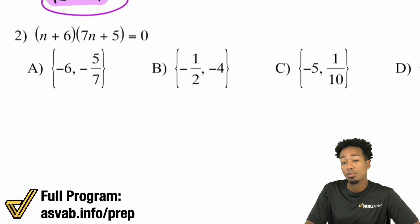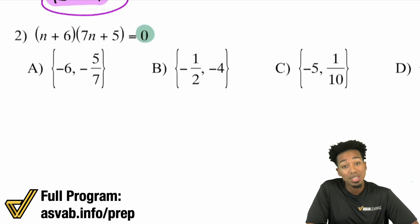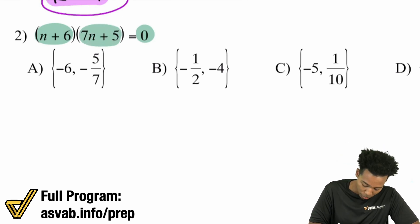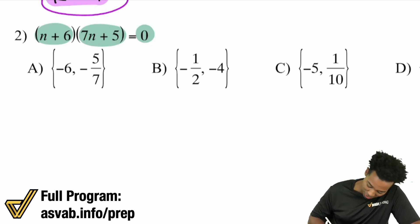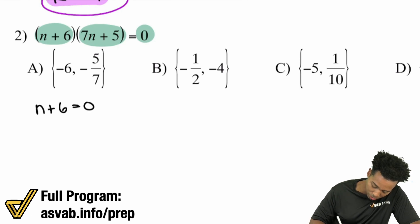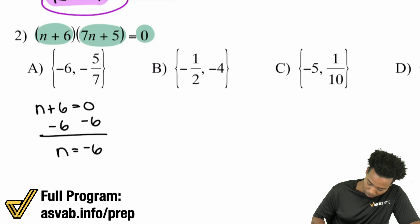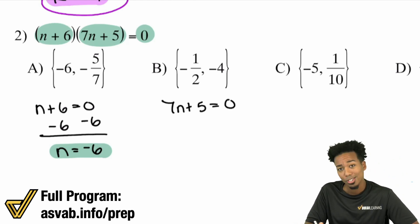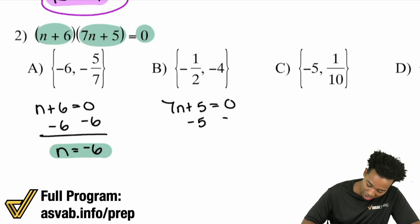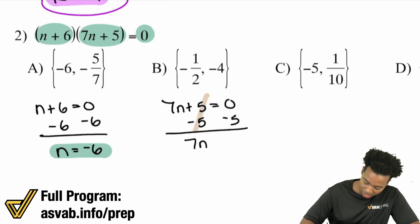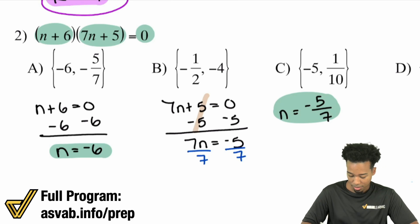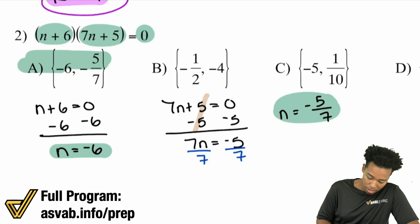Number two: we have n plus six times seven n plus five. Notice how it equals zero. So this means we can apply the zero product property. We split it up because if this equals zero, the whole thing is zero because you're multiplying. So let's give it a shot. I'm going to take n plus six, set that equal to zero. All I have to do is subtract six on both sides and I get n equals negative six — that's one of my answers. The second one: seven n plus five equals zero. We subtract five on both sides, giving us seven n equals negative five. Then divide both sides by seven, giving us n equals negative five over seven. And there's our second answer. Negative six and negative five over seven.